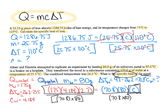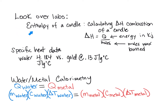Finally, review the labs we've done — the enthalpy of a candle, where we calculated delta H by figuring out how much energy the water gained from the burning candle and dividing by the moles of wax burned, giving us enthalpy in kilojoules per mole. Also review specific heat data, such as water having a specific heat of 4.184 versus gold at only 0.13. Make sure you understand the law of conservation of energy: the energy the water gains equals the energy the metal gave off, and depending on whether the reaction is exothermic or endothermic, the water temperature can go up or down.